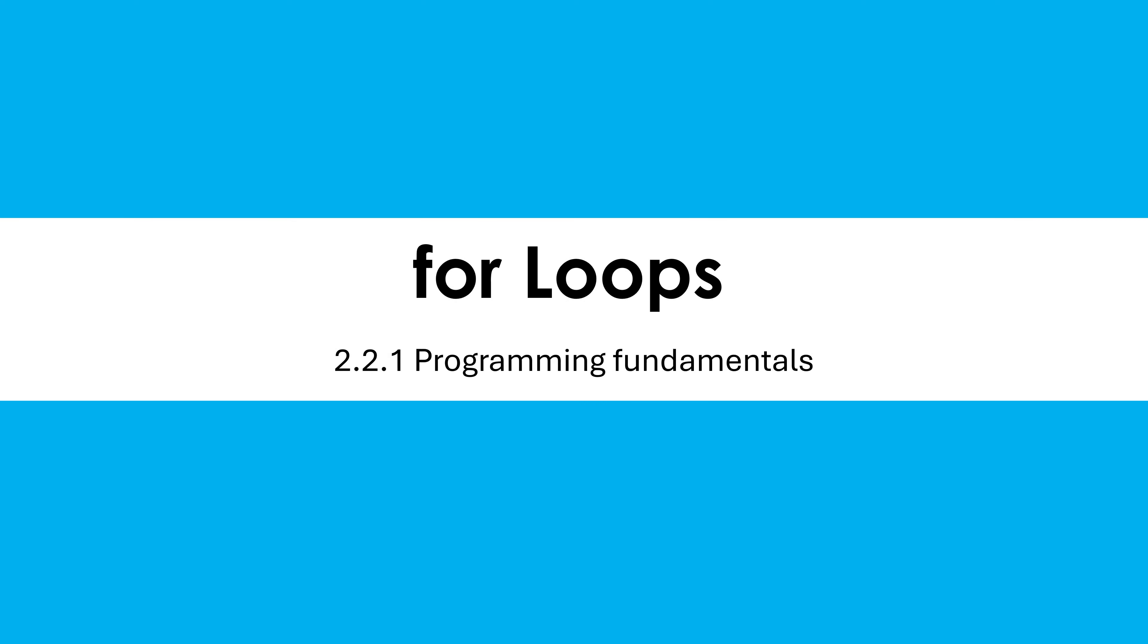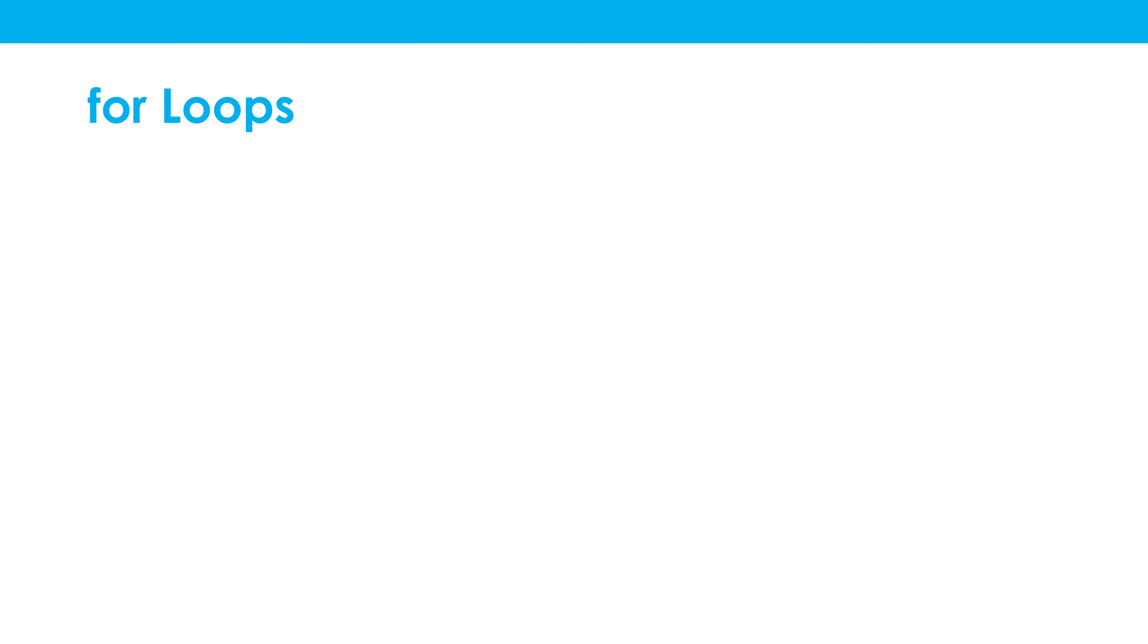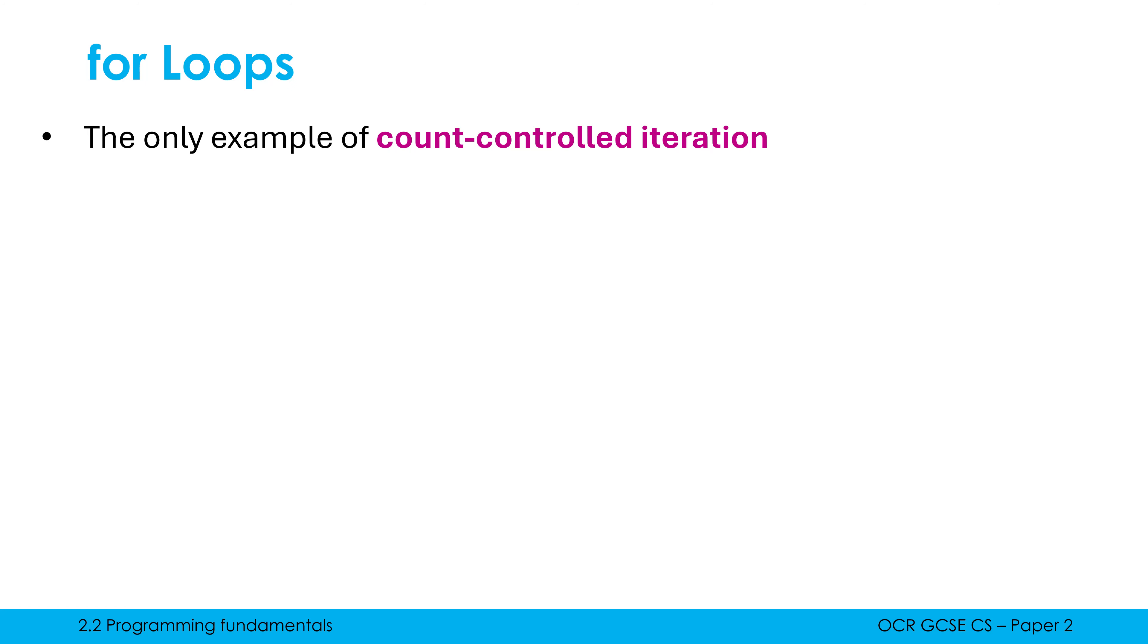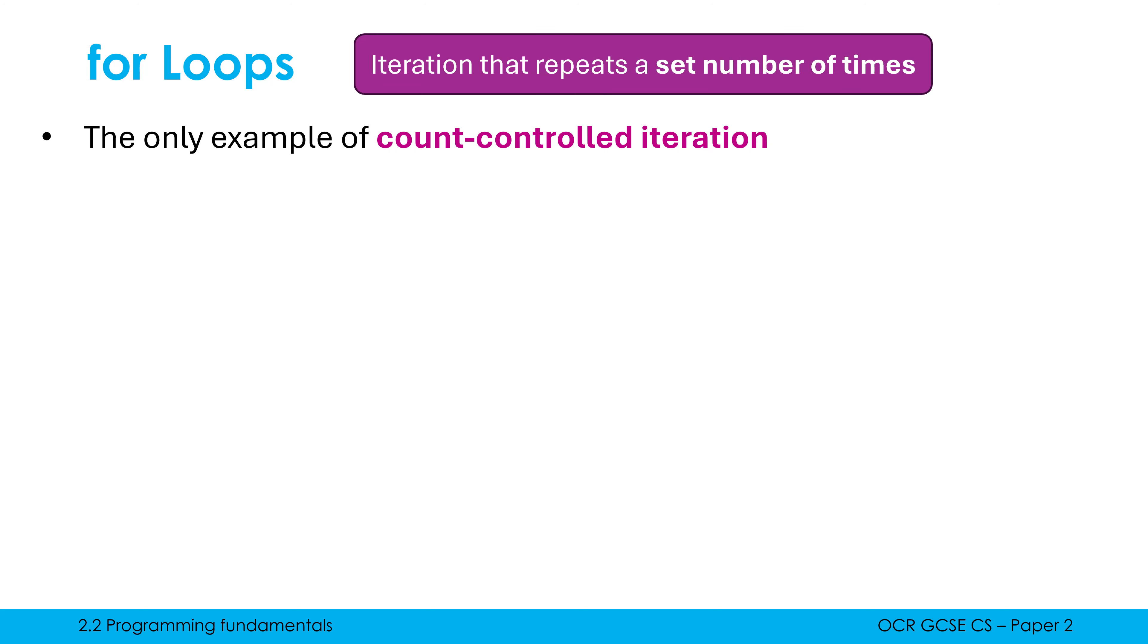Hello, let's have a look at how for loops work in programming. A for loop is our only real example of what we would call count-controlled iteration. Count-controlled iteration is where we have iteration that repeats a set number of times.